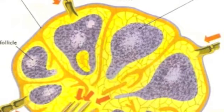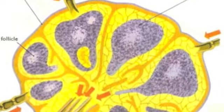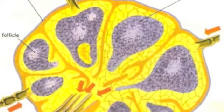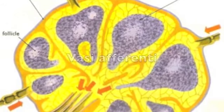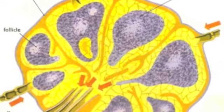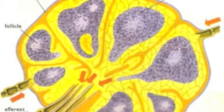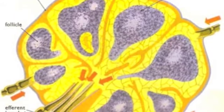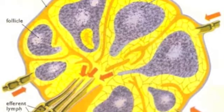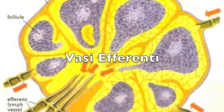Along the course of the lymph we find lymph nodes — small cleaning stations. These lymph nodes have afferent vessels that enter the node and supply lymph. Inside, the lymph is processed and cleaned, and once filtered it exits through a smaller number of vessels — one to three — called efferent vessels.